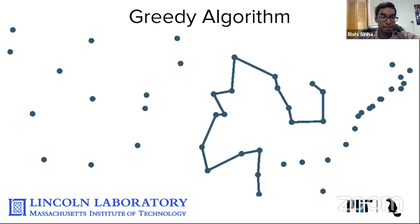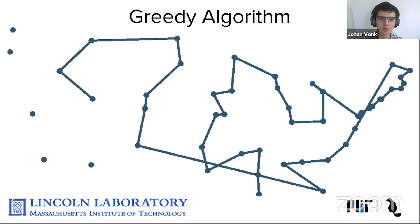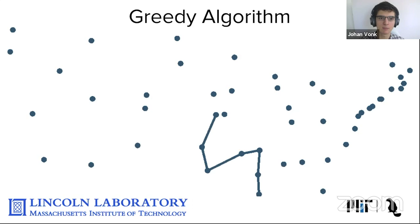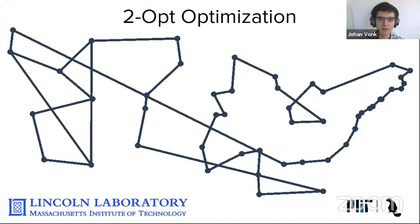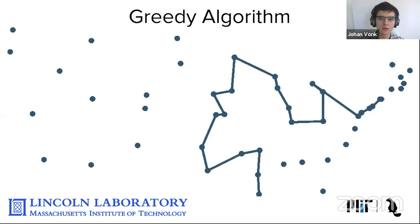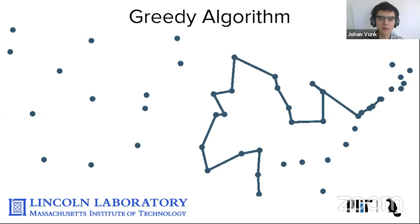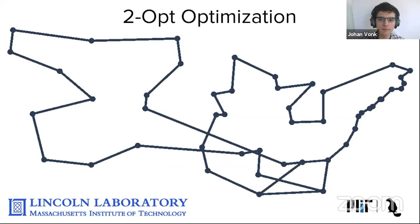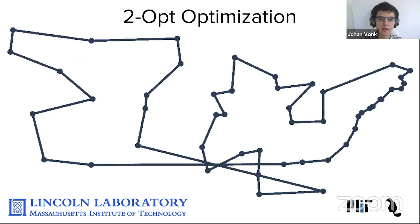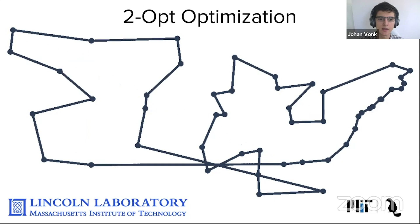Within each region, we solved the traveling salesman problem to efficiently route between all different locations. We first used the greedy method to make an initial estimate of the shortest path — starting at one of the bases and going to the closest unvisited location. While this doesn't find the best path, it's a good initial estimate. After that, we used 2-opt to optimize the path. 2-opt is a method that, whenever the path crosses itself, tries to swap nodes so the path no longer crosses itself, since a crossing path is usually longer than one that does not cross. This is repeated until no swaps can be made to shorten the route.